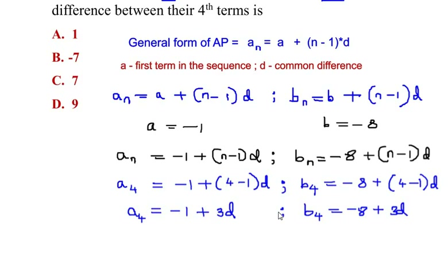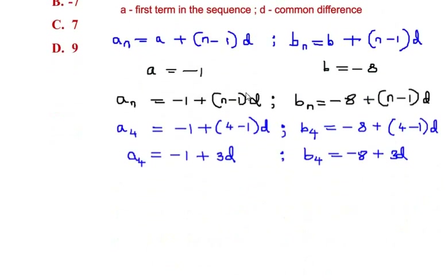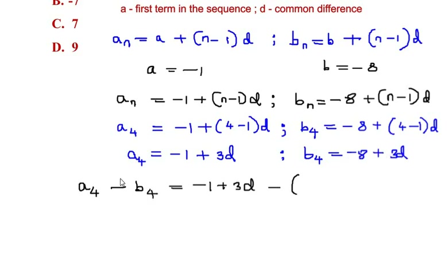Now we have a_4 and b_4, the fourth terms of the two arithmetic progressions. We need to find the difference between them, so we compute a_4 minus b_4. Substituting the values: negative 1 plus 3d, minus the bracket negative 8 plus 3d.